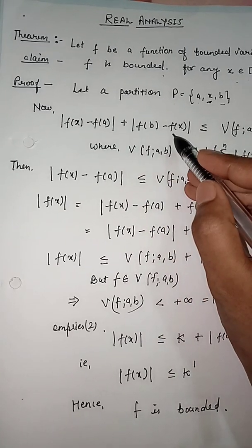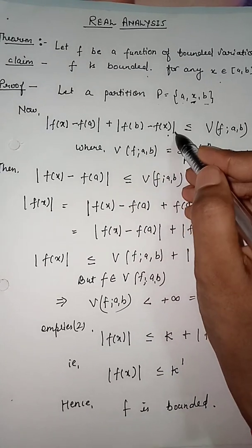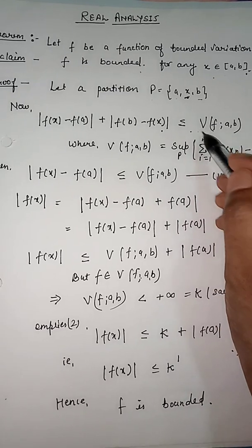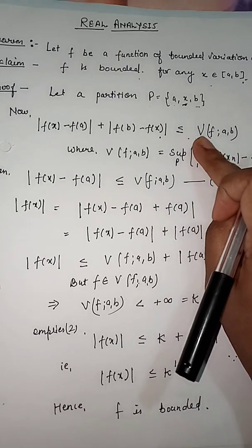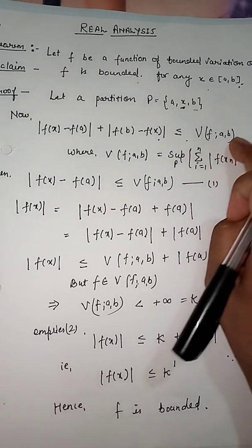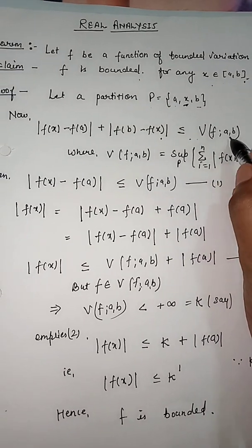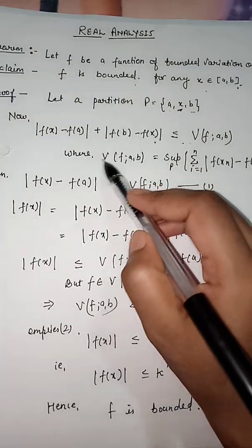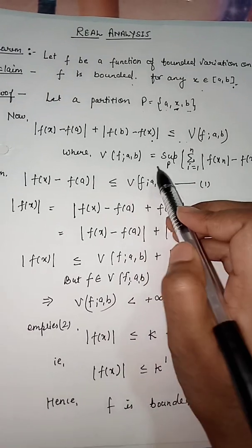The condition gives us: |f(x) - f(a)| + |f(b) - f(x)| ≤ V_a^b(f), where V_a^b(f) denotes the total variation of the function f on the closed interval [a, b]. So we have the variation of f on [a, b].